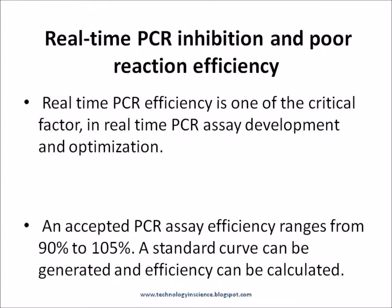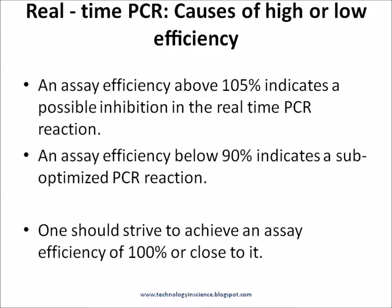An accepted PCR assay efficiency range for real-time PCR is 90% to 105%. An assay efficiency above 105% indicates possible inhibition in the real-time PCR reaction. The main reasons for inhibition are the poor quality of DNA or RNA used as template, use of high template concentration, sub-optimized extraction procedures, and the presence of high amounts of chaotropic salts which can inhibit Taq polymerase activity.